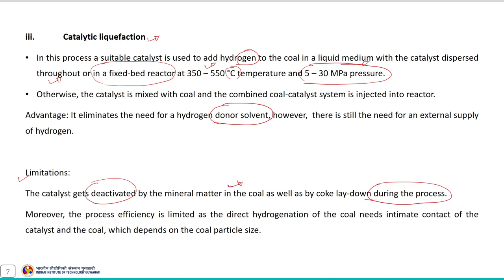Process efficiency is also limited because direct hydrogenation of coal requires intimate contact between the catalyst and coal particles, which depends on the coal particle size. If the coal particle size is not in the appropriate range, it may not be able to diffuse into the catalyst pores, decreasing process efficiency. Therefore, appropriate coal particle size must be used during catalytic liquefaction to improve efficiency.